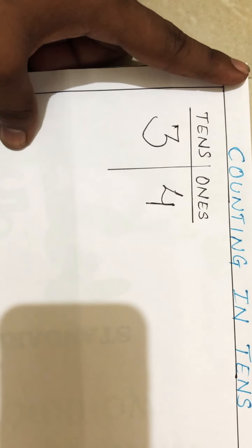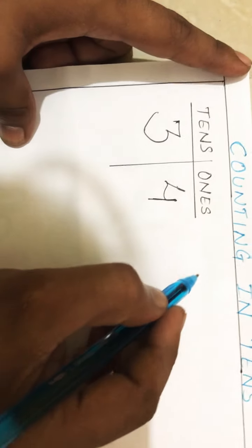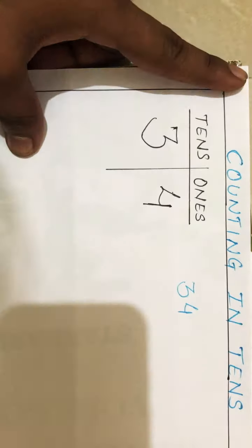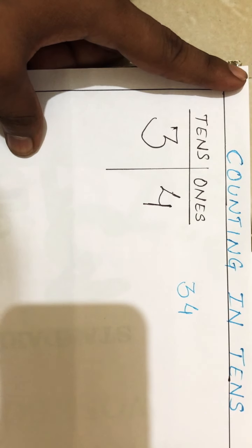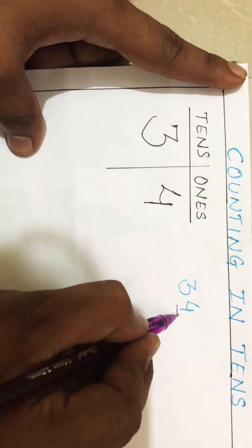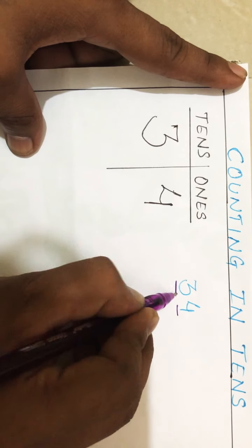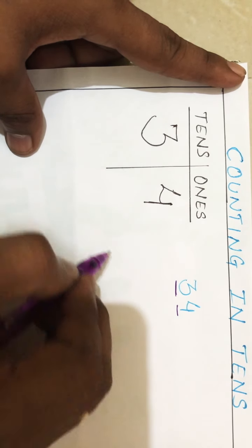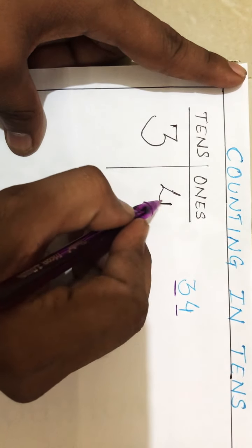Now see, whenever we are writing a number, suppose I am writing here 34, every digit has that particular value according to their place. This four belongs to one's place.